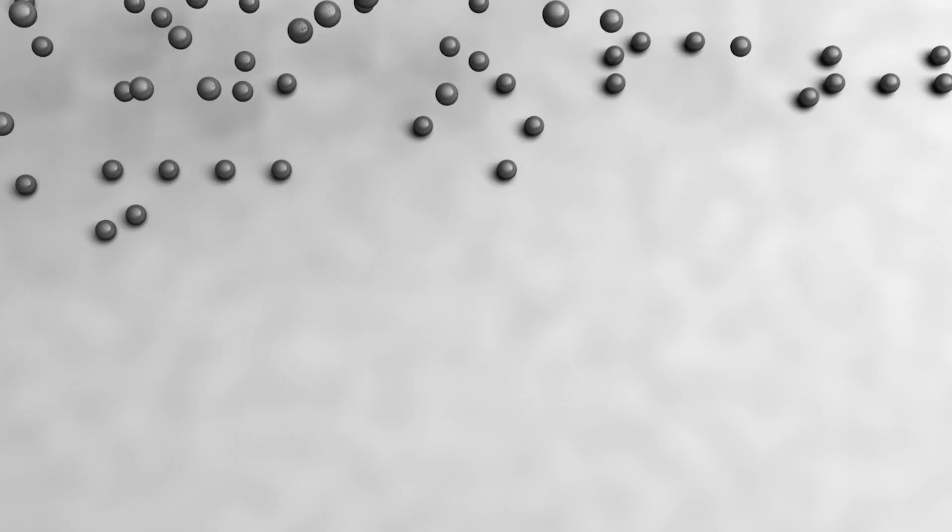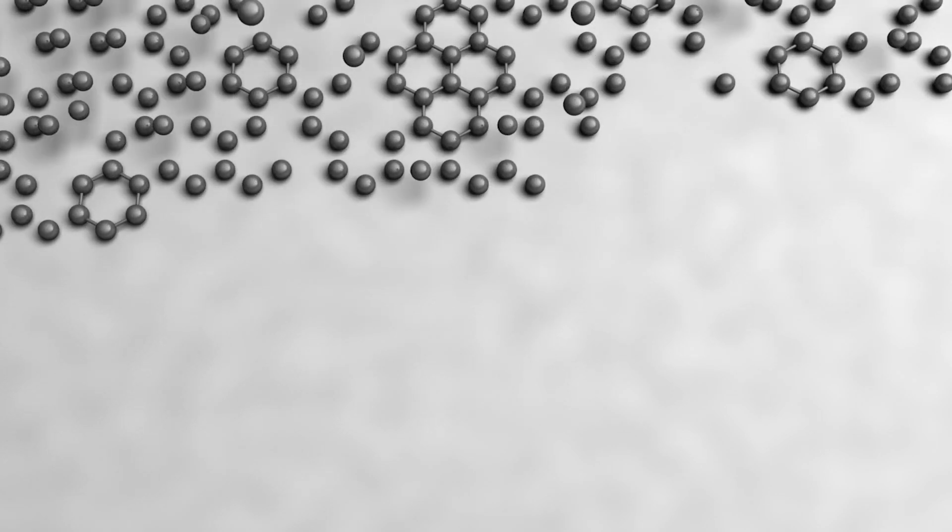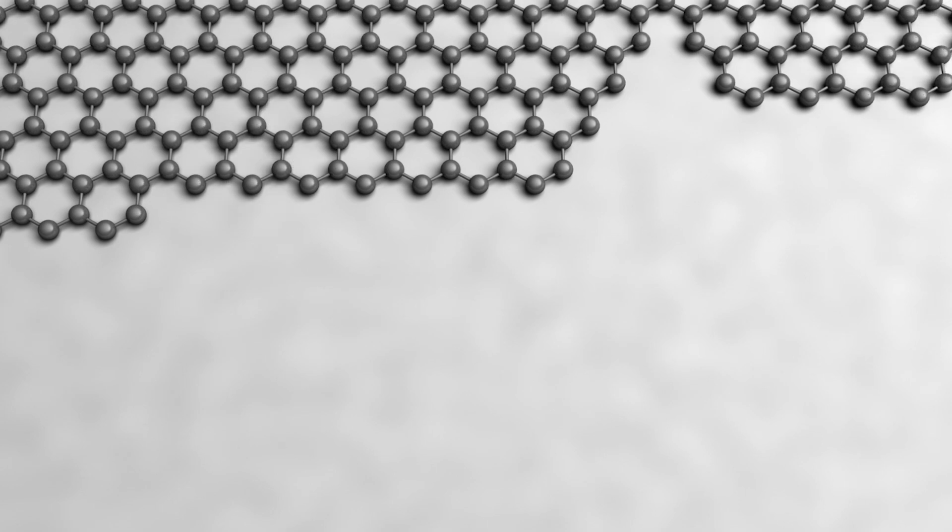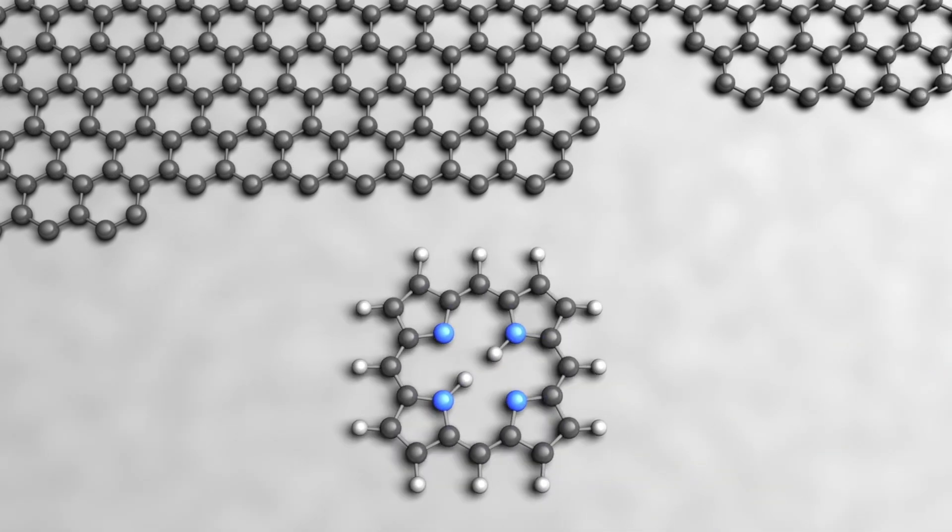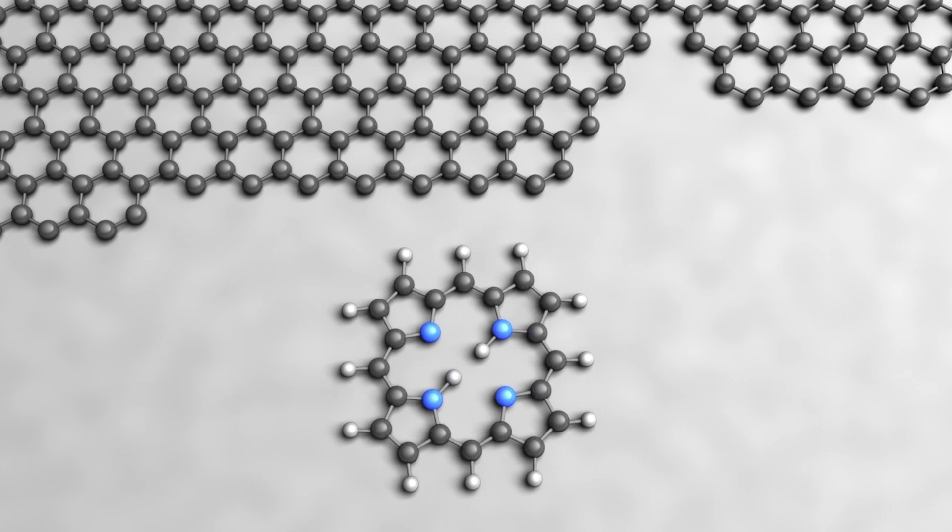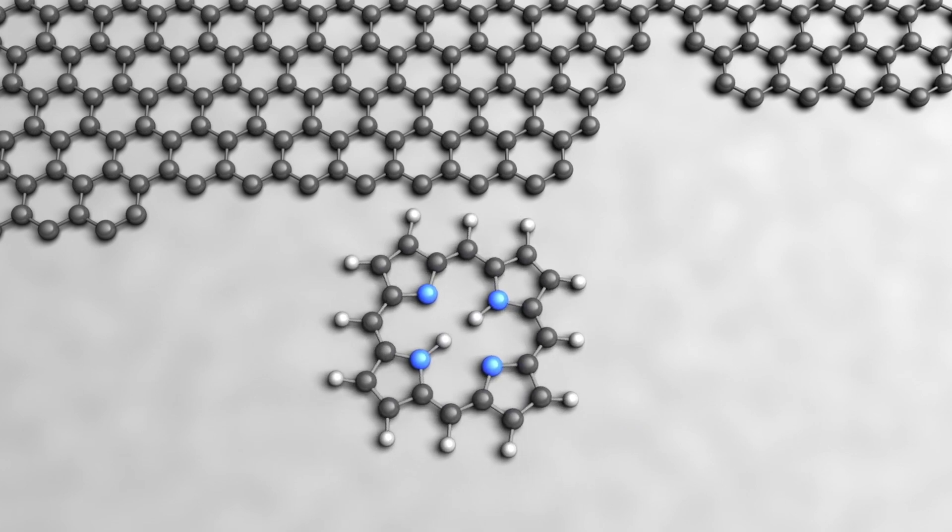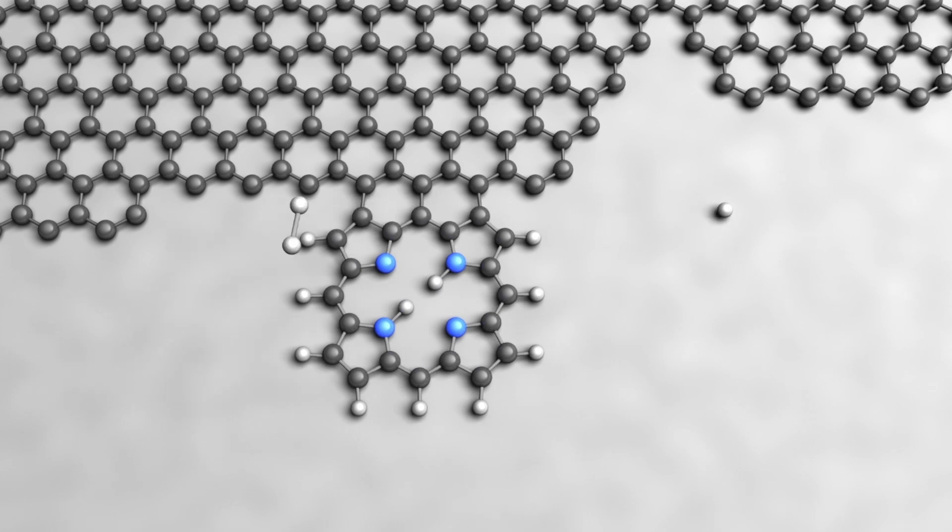In a study published in Nature Chemistry, scientists from the Technical University of Munich report on a new hybrid structure, combining the wonder material of nanotechnology, graphene, with the molecules of life, porphyrins. Let's see how this was done and why the findings are significant.